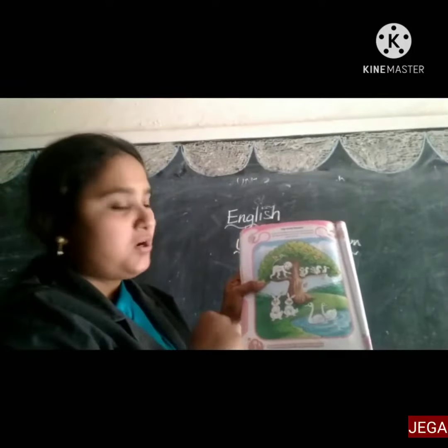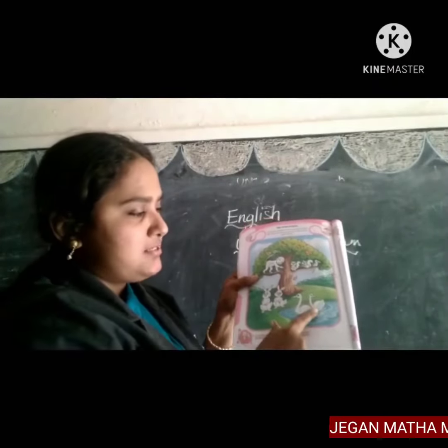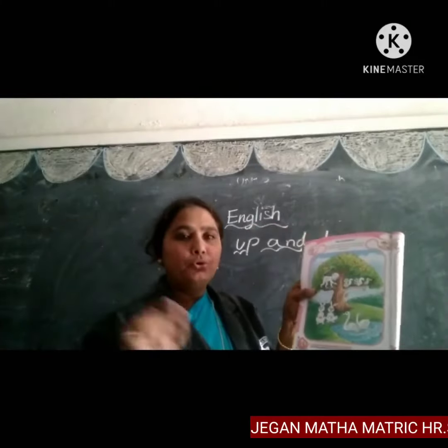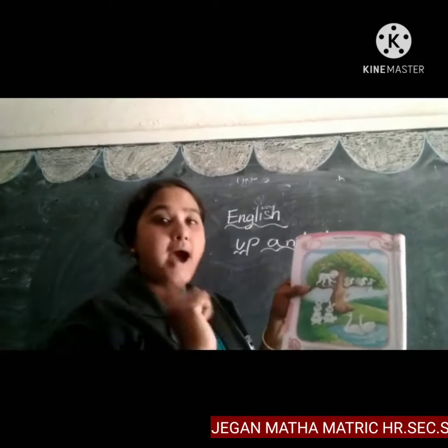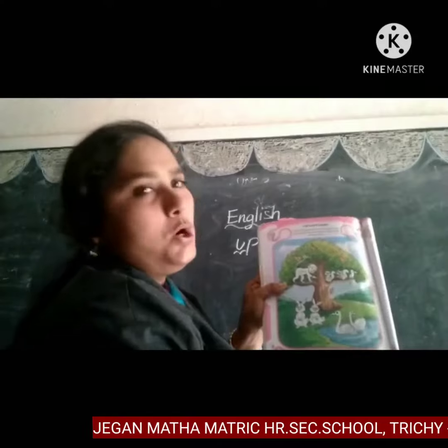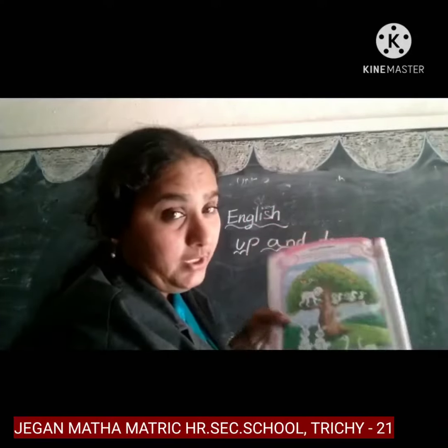What is down, children? The rabbit and the swan. So what do you have to do? You have to color. What do you have to do? You have to color these two. Now you understood the activity.